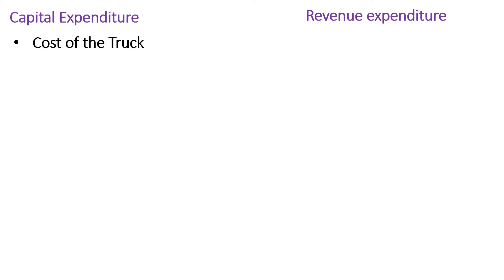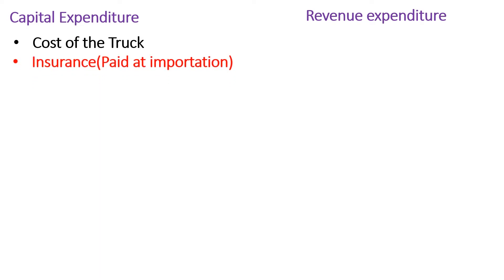Let's go through the specific costs from my illustration. The cost of purchasing the truck — the money paid to buy it — is definitely capital expenditure. The insurance paid while getting that truck onto the ship to come to Uganda is also a capital expenditure. Now, that insurance cost is different from the comprehensive insurance premiums I'll pay for the truck when it is operating in my business — that operating insurance will be considered a revenue expenditure. But the insurance cost paid to keep the truck safe while at sea is capital expenditure.